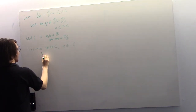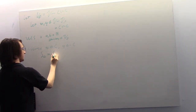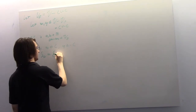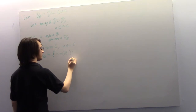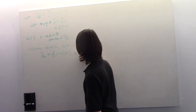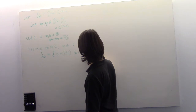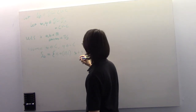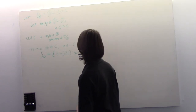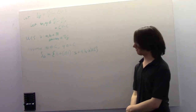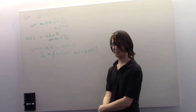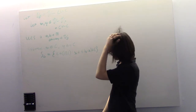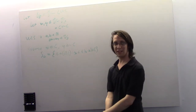Call S-naught the set of T in the closed interval [0,1] such that X plus T times (Y minus X) is an element of C. If T equals 0, then X is an element of C by hypothesis, so 0 is definitely an element of S-naught.